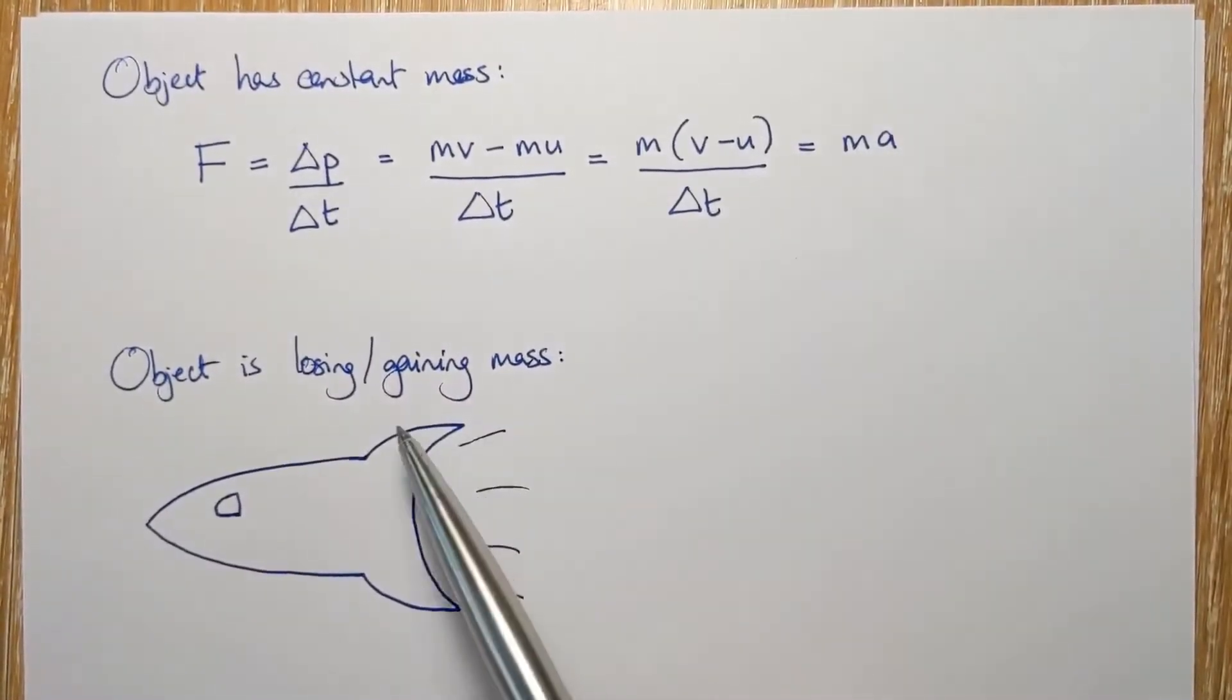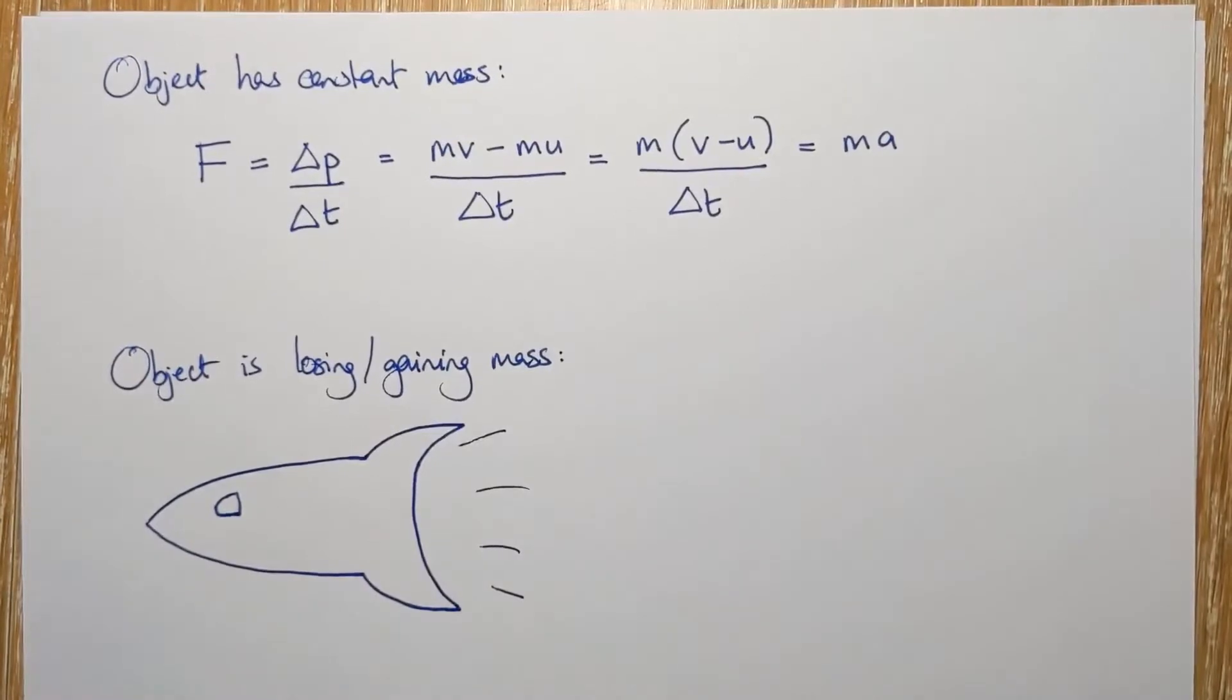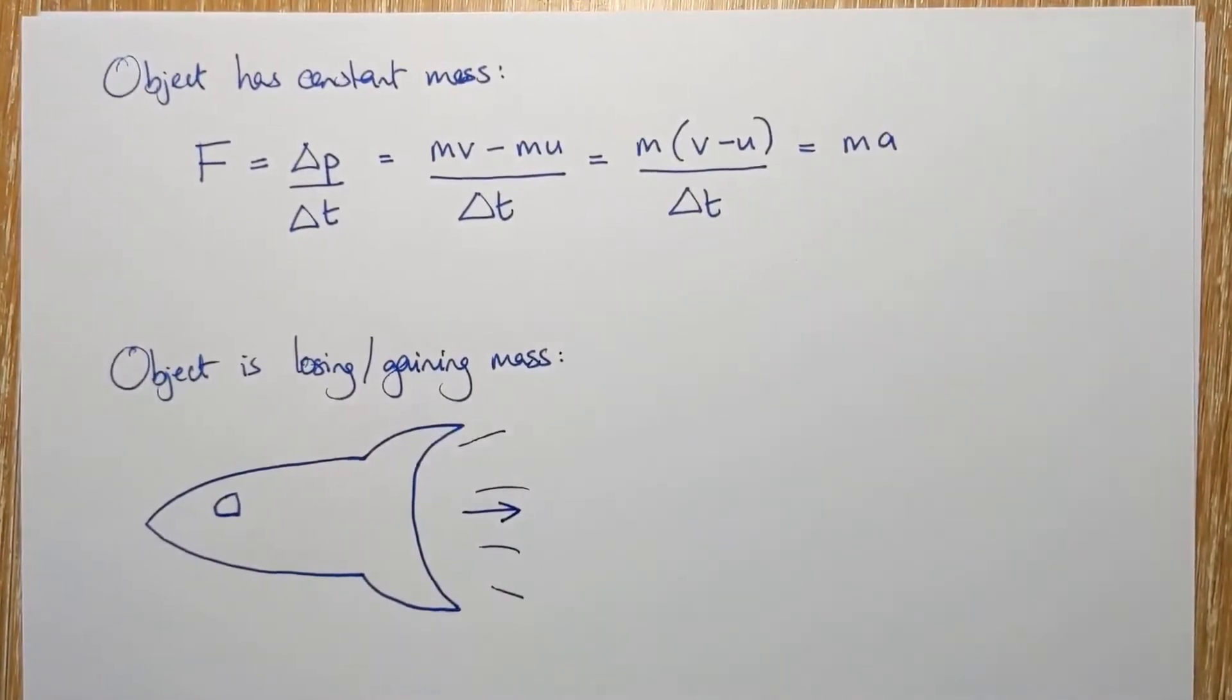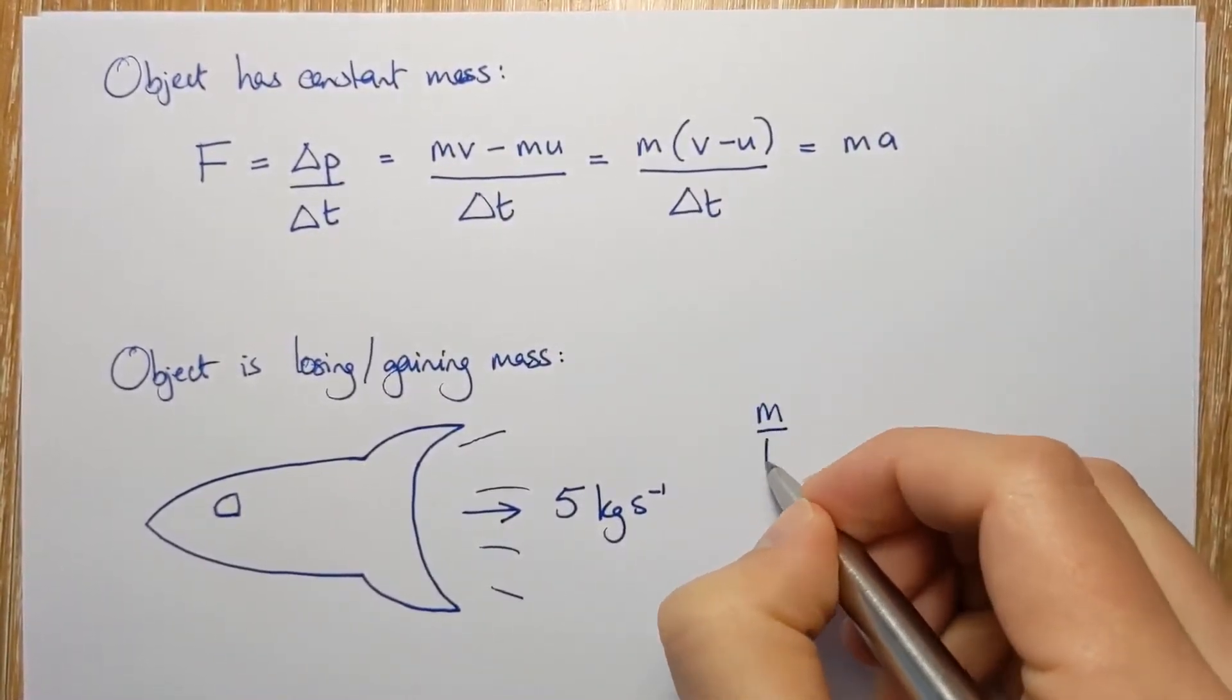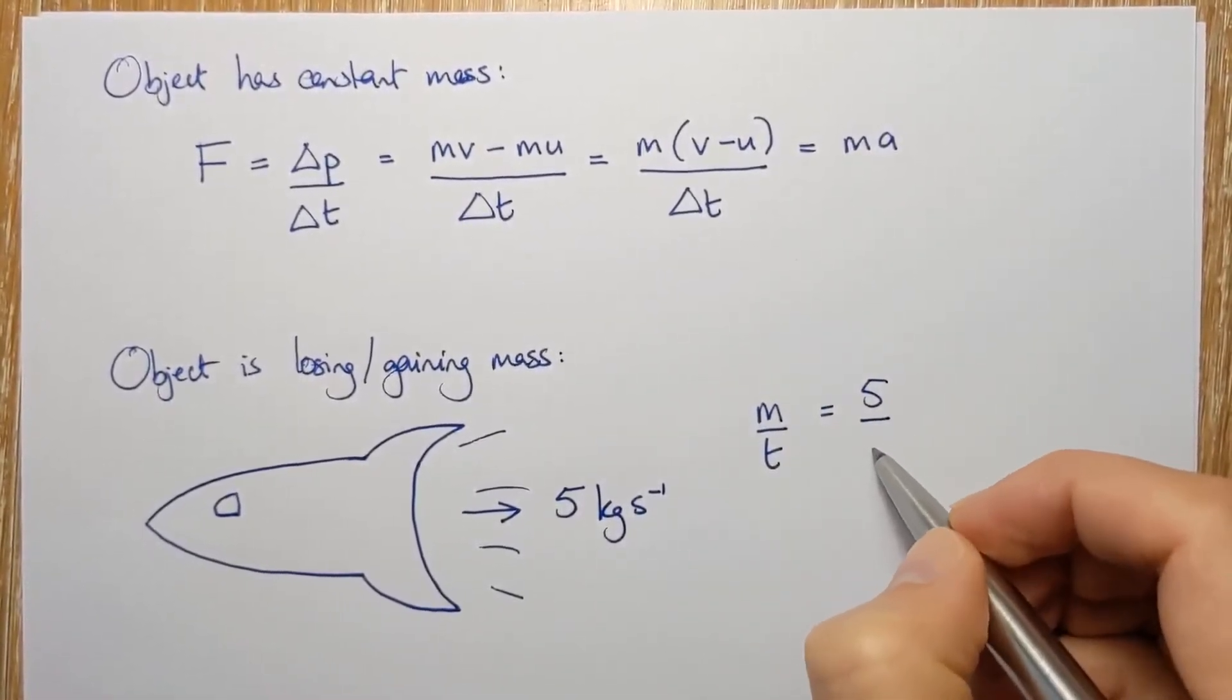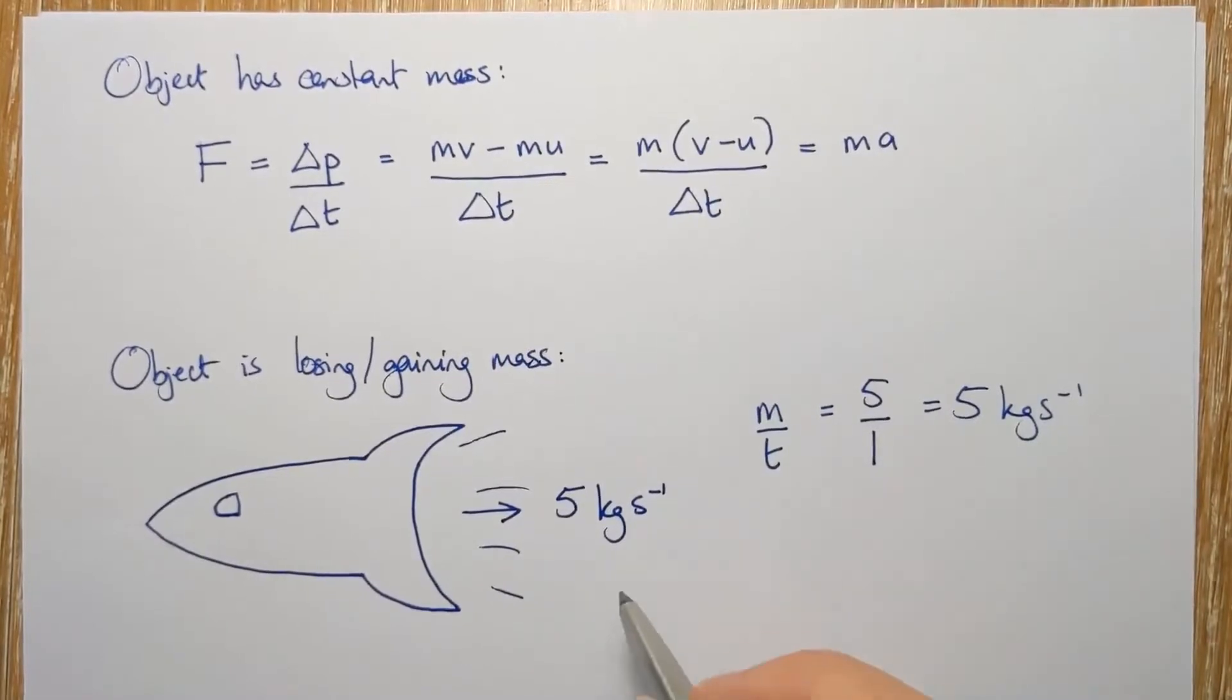So typically, this type of question will involve a rocket of some sort, some sort of jet propelled thing. So this is meant to be my rocket and it's pushing out the back, its spent fuel. And it's going to be pushing, say, five kilograms per second of fuel out the back of the rocket. And so what that means is that five kilograms every second is being pushed out the back.